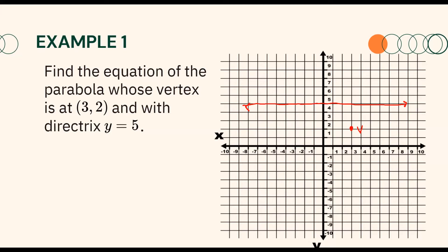Therefore, since the distance between the vertex and the directrix is 3 units, we can say that p is equal to 3. Moreover, remember that the directrix is outside the parabola. Thus, given this vertex and this directrix, it only implies that the parabola opens downward.